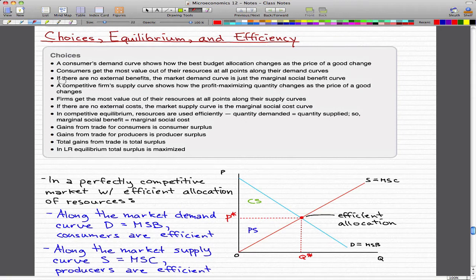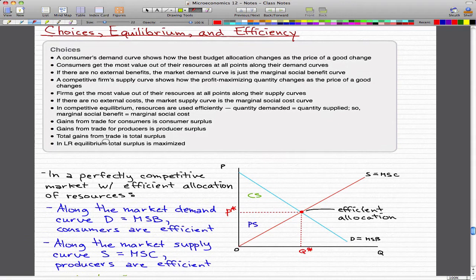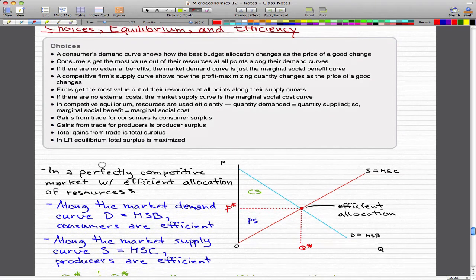A competitive firm's supply curve shows how the profit-maximizing quantity changes as the price of a good changes. Firms get the most value out of their resources at all points along their supply curve. If there are no external costs, the market supply curve is the marginal social cost curve. You can pause the video and read this.